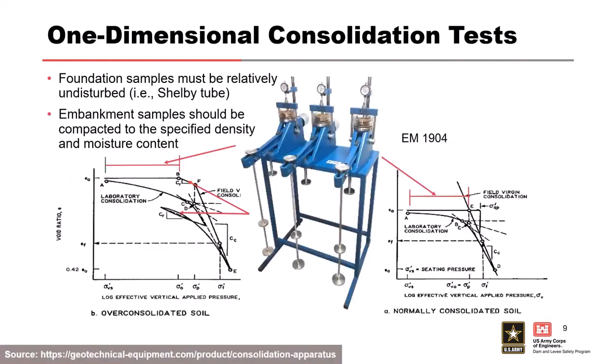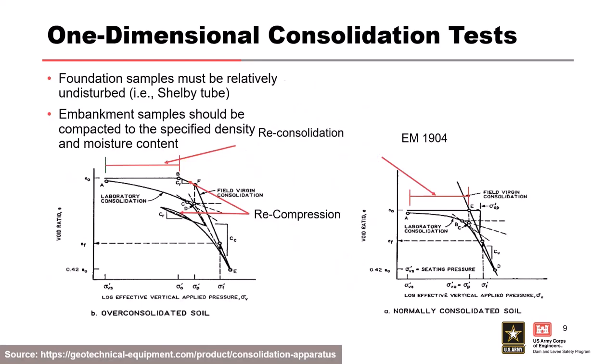We want Shelby tube samples — undisturbed as possible — to run the oedometer test, because sample disturbance significantly affects the results. Try to get the best sample you can in the field. The consolidation test apparatus shown here is the same one from the last module.